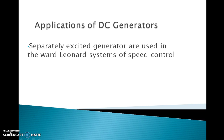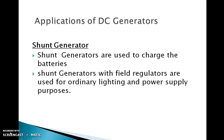Considering the applications of DC generators — first, separately excited DC generators are generally used in the Ward-Leonard systems of speed control.